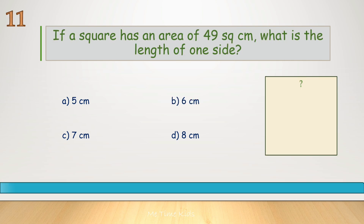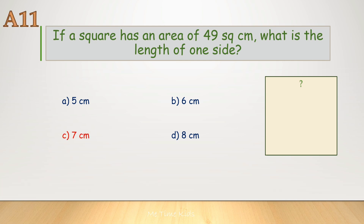If a square has an area of 49 square centimeters, what is the length of one side? Correct answer is C, 7 centimeters.